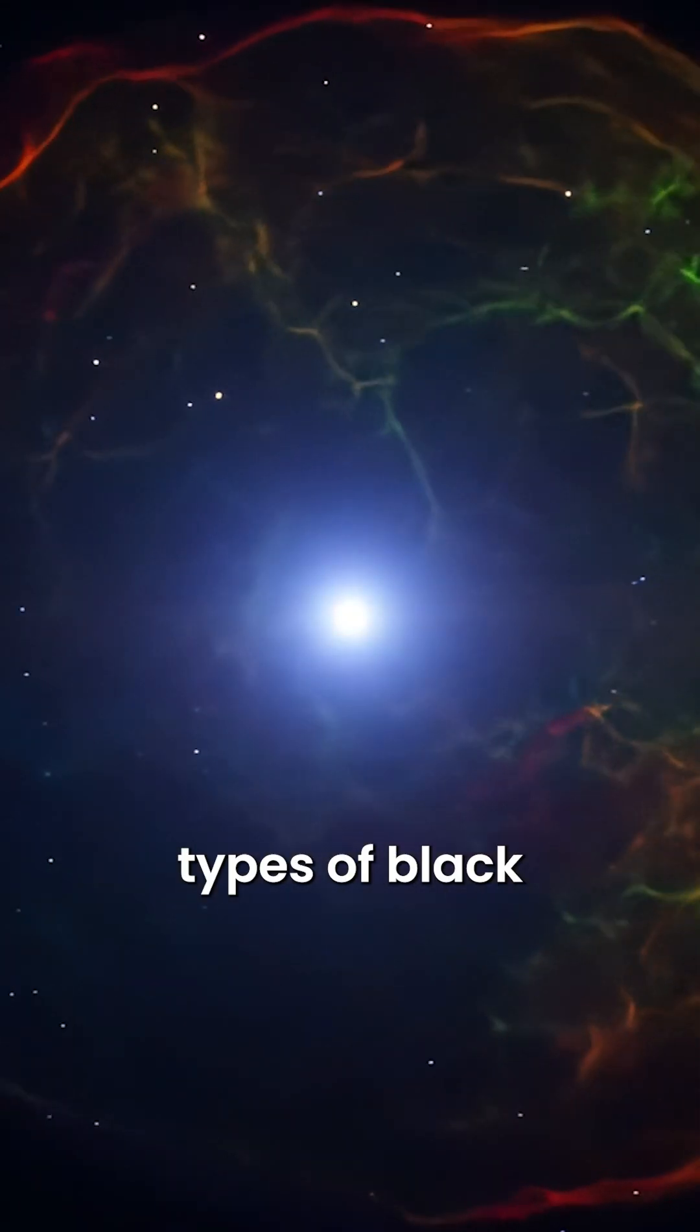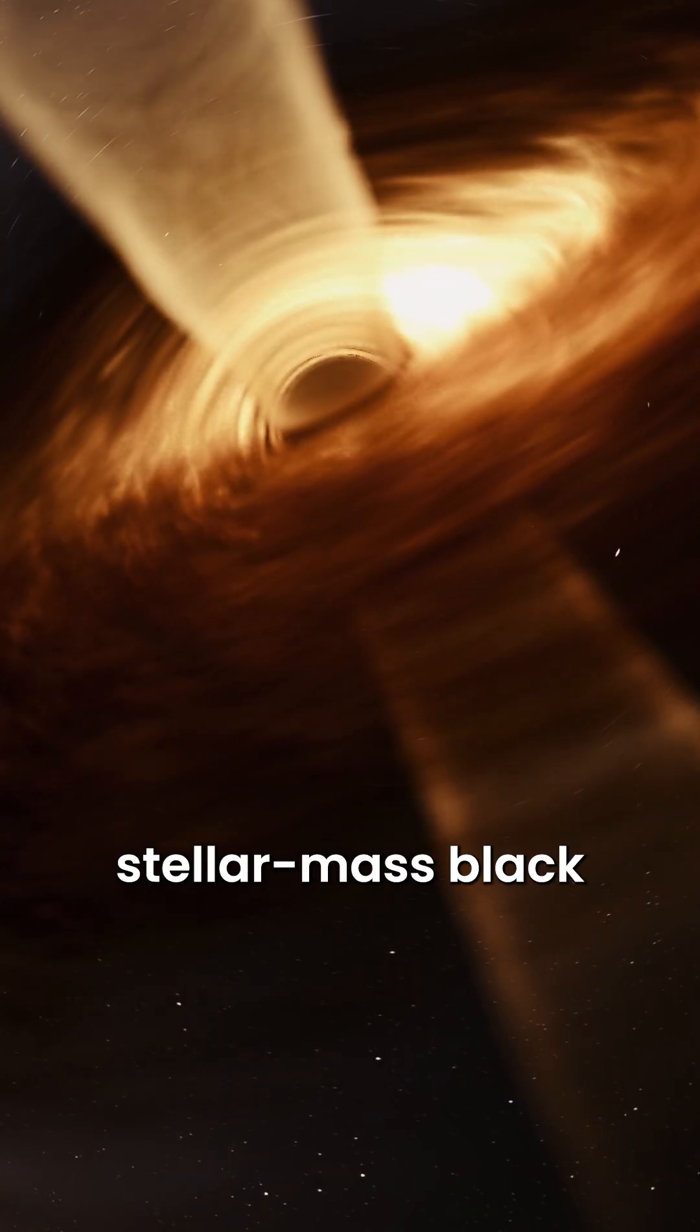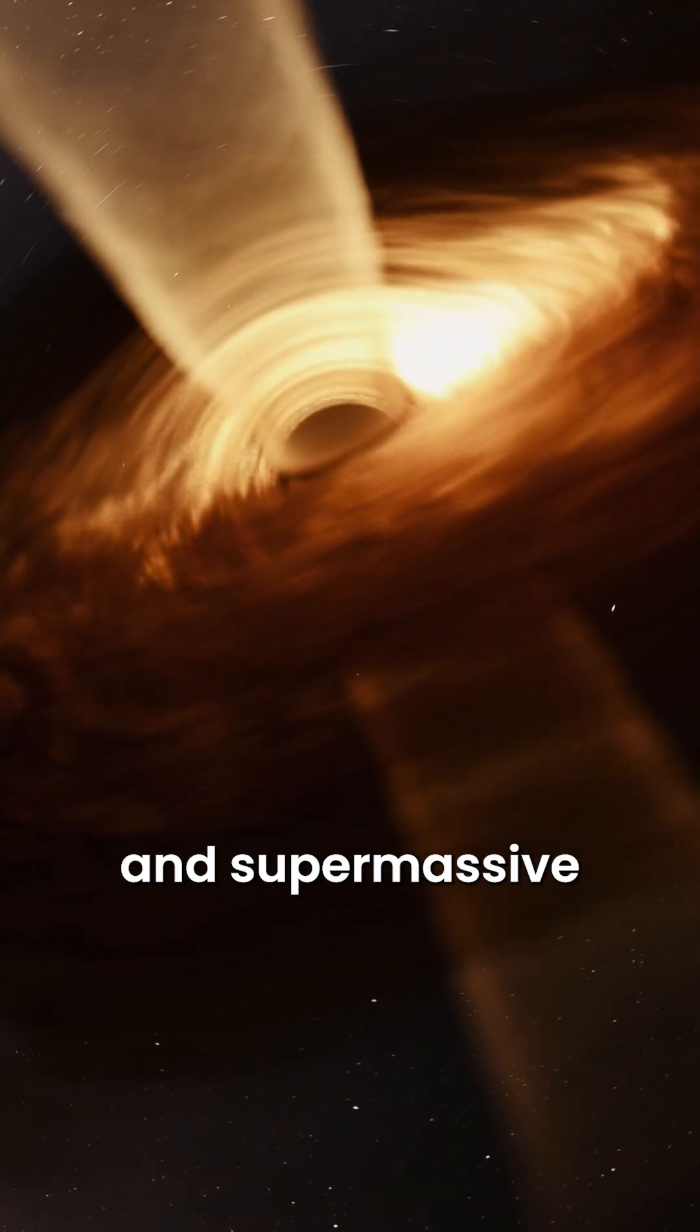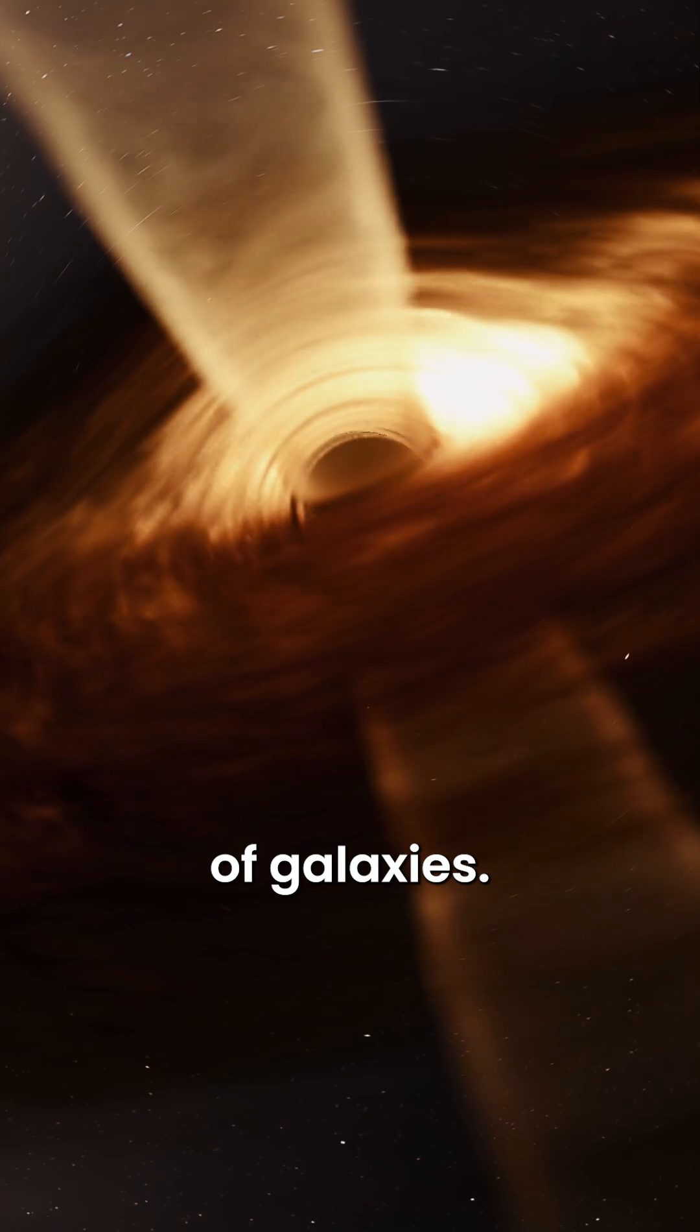There are different types of black holes, such as stellar mass black holes, which have diameters of a few tens of kilometers, and supermassive black holes found at the centers of galaxies.